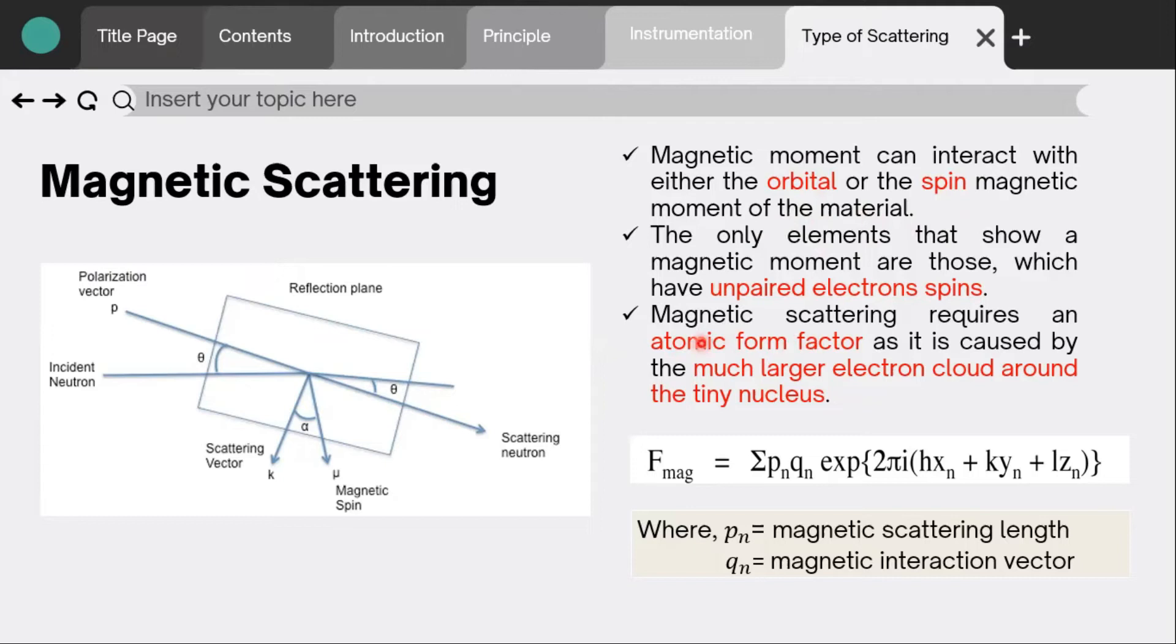When neutrons hit the solid, this produces a scattering from the magnetic moment vector as well as the scattering vector from the neutron itself. This figure shows the different vectors produced when the incident beam hits the solid. When looking at the magnetic scattering, it needs to be considered coherent magnetic diffraction peaks where the magnetic contributions to the differential cross section is p squared q squared for an unpolarized incident beam.